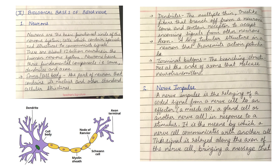The soma, or cell body, is the part of the neuron that contains its nucleus and other standard cellular structures. Dendrites are the multiple thin tree-like fibers that branch off from a neuron's soma and contain receptors for incoming signals from other neurons. The axon is the long tubular structure that transmits action potentials, and the terminal buttons are the branching structures at the end of axons that release neurotransmitters.